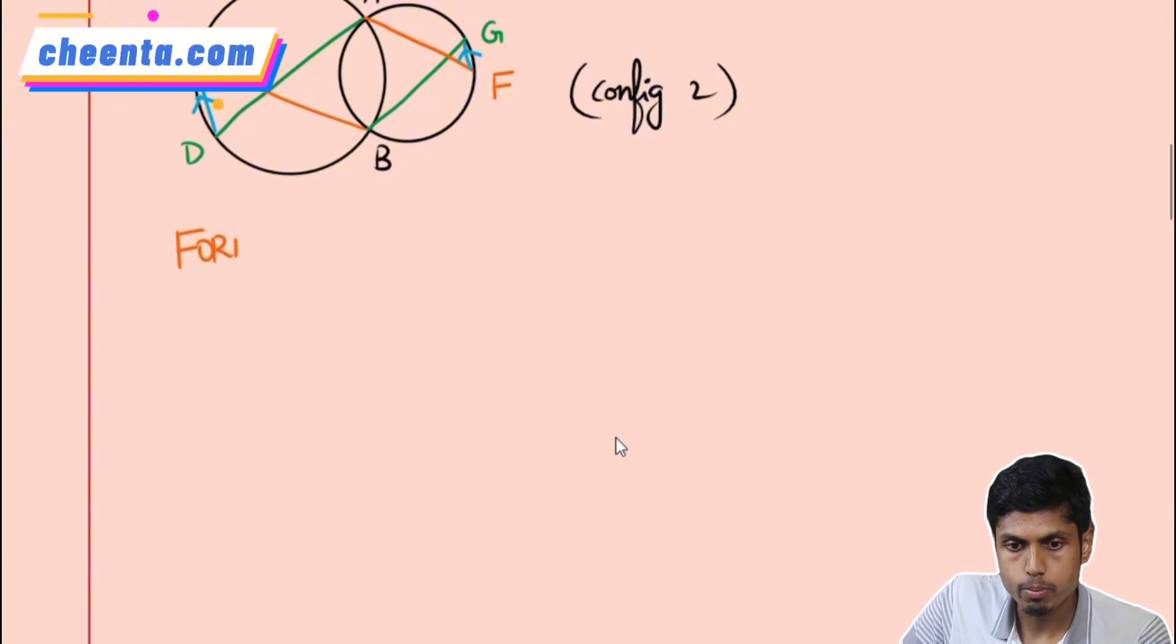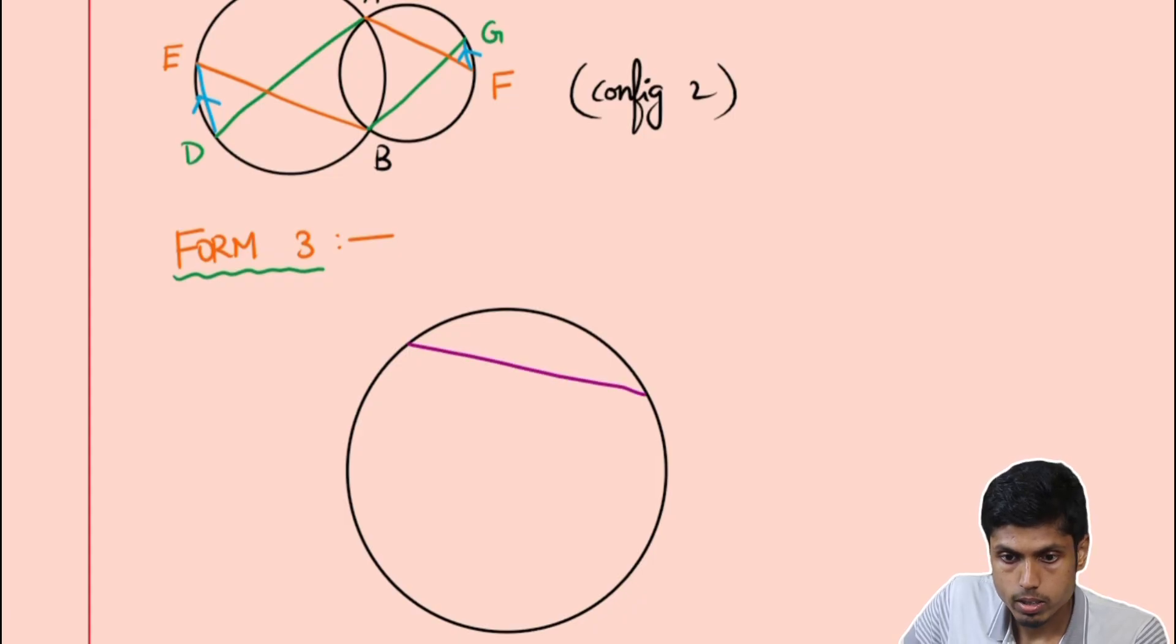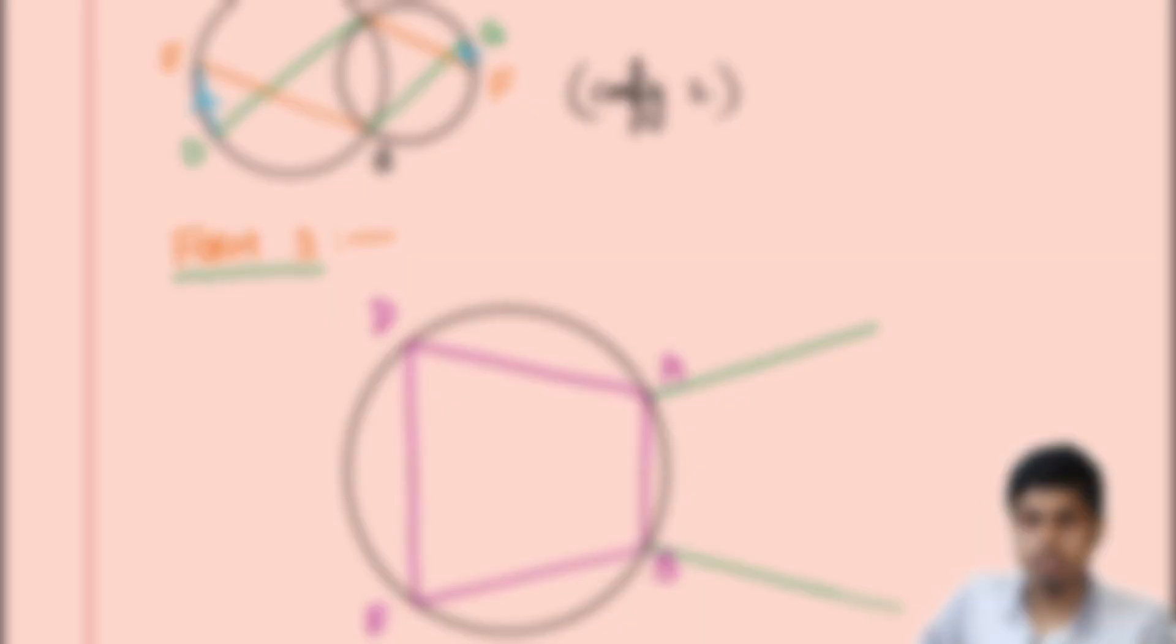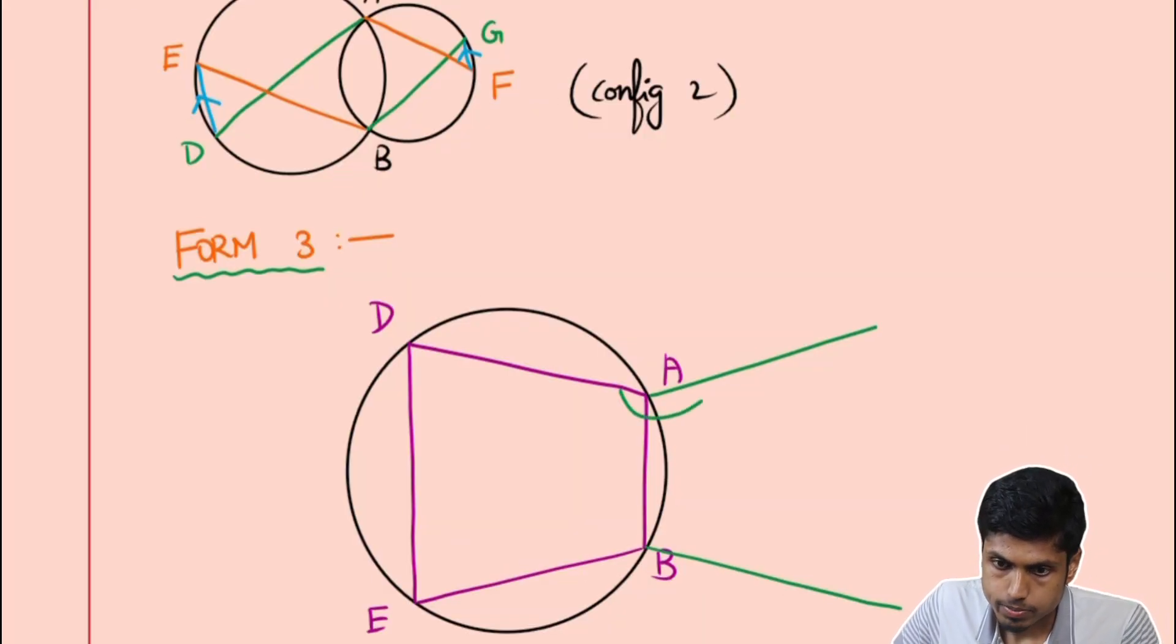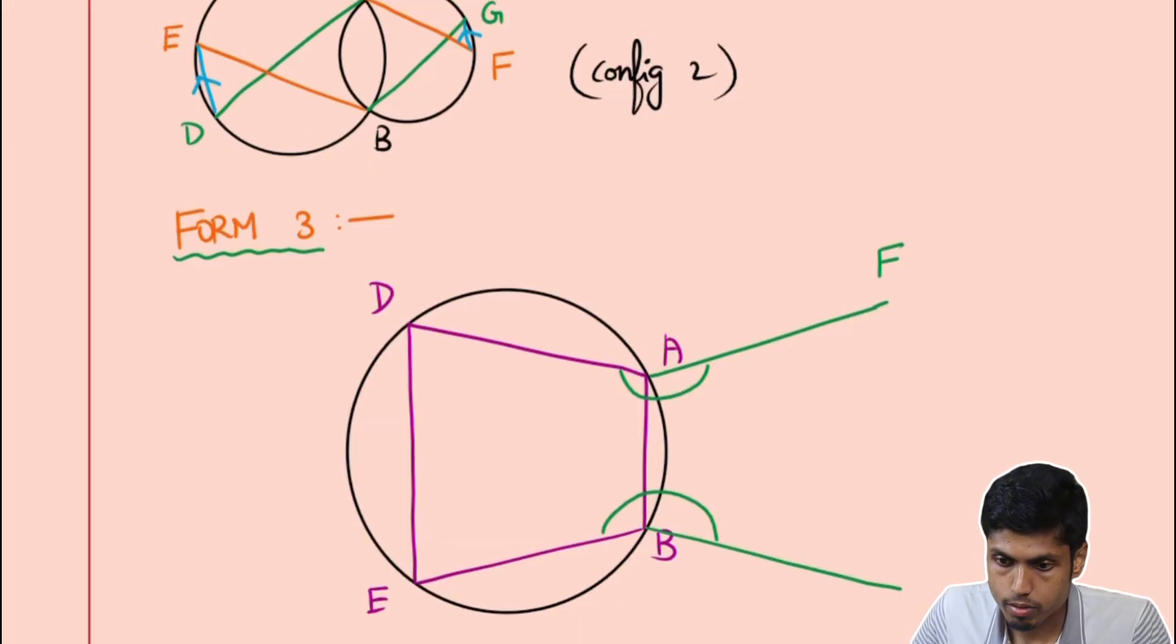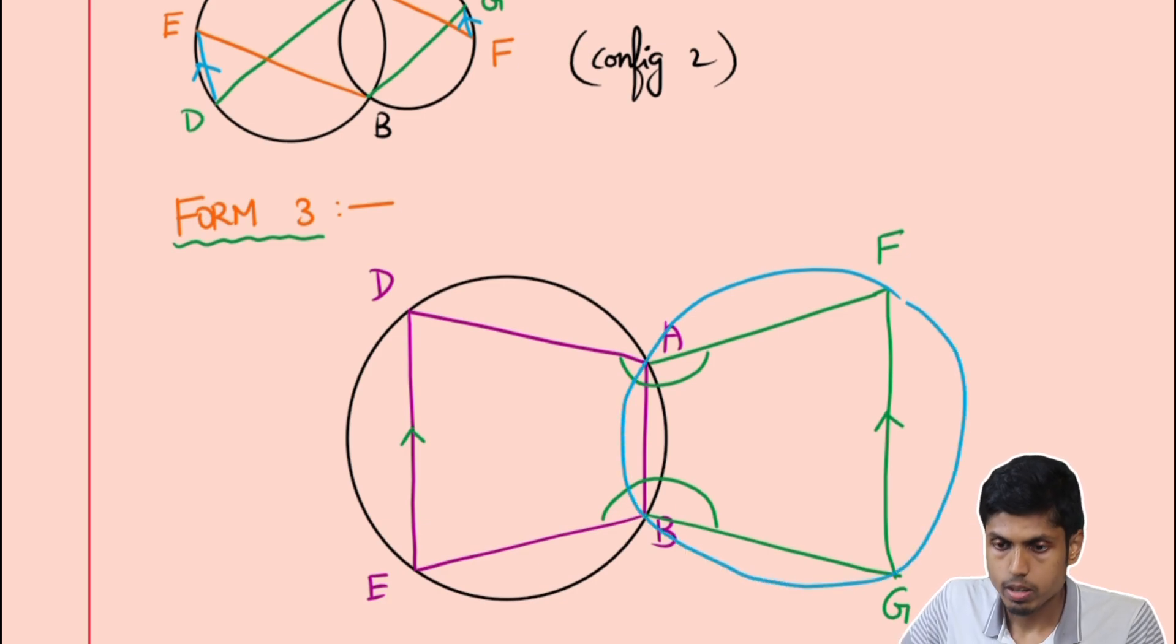Let's now move to form 3 of it. Now it gets a bit more non-trivial. Now I have only one circle where you have the cyclic quadrilateral ABAD. And now we construct lines starting from A and B respectively such that the angles made by them with AD and BE are equal respectively. And we construct up to a point, call it F, AF and B to G such that DE is parallel to FG. Then it turns out FABG form concyclic points.